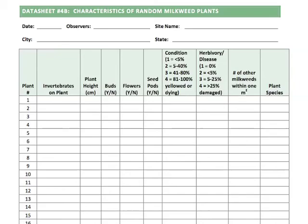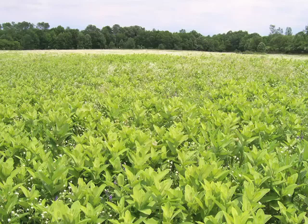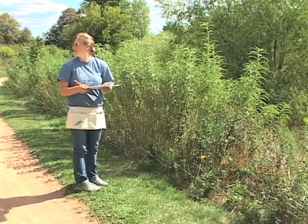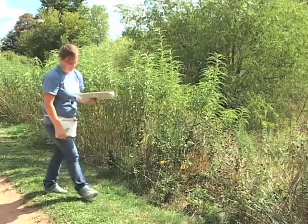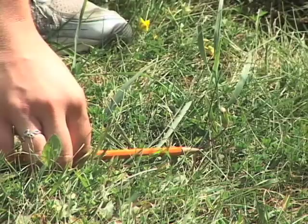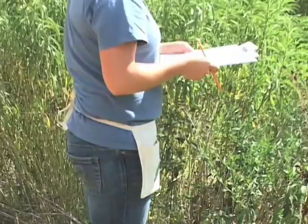If you have a big field with lots of plants, you'll need to sample plants randomly. Randomly choose a direction to walk through your monitoring site. One way to do this is to stand at some point inside the site or on the edge and toss your ruler, butterfly net, or pencil up into the air, then walk in the direction it points. It's important to do this randomly so that you don't subconsciously start walking in a direction with better-looking plants.